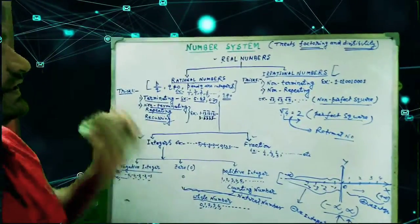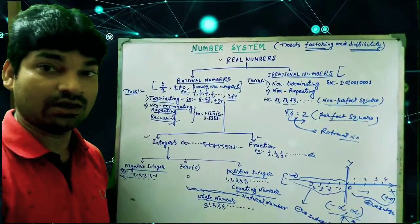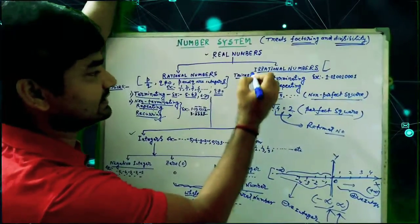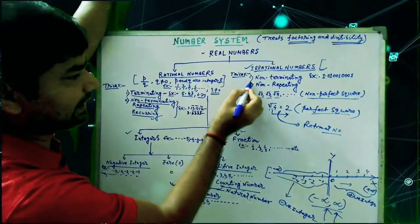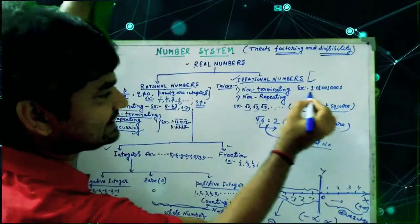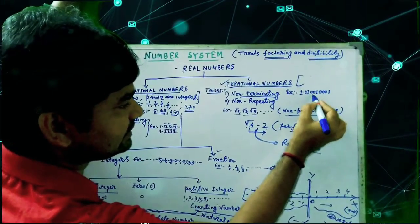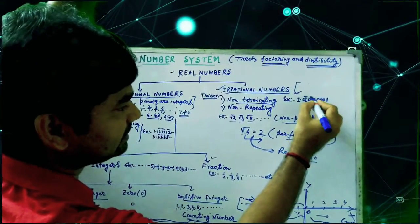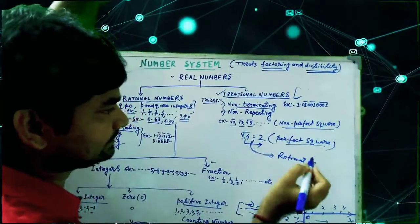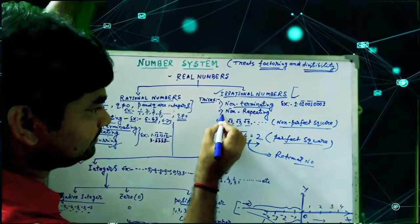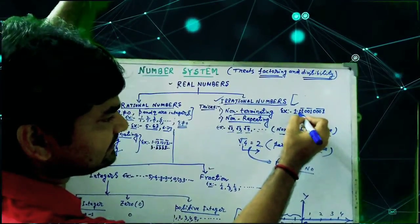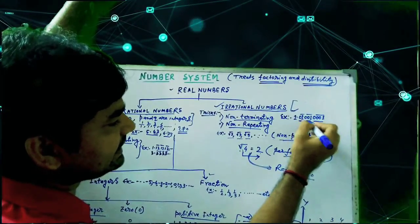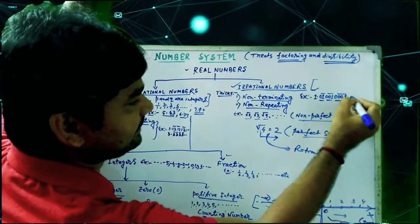We have two identification tricks for irrational numbers. Trick 1: non-terminating. For example, 1.01001000001... — the digits after the decimal point are non-terminating. Trick 2: non-repeating. After the decimal point, the numbers are not repeating — different digits appear after the decimal point each time.